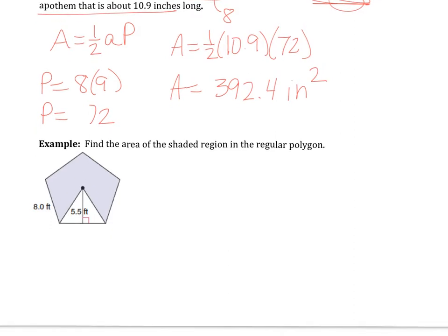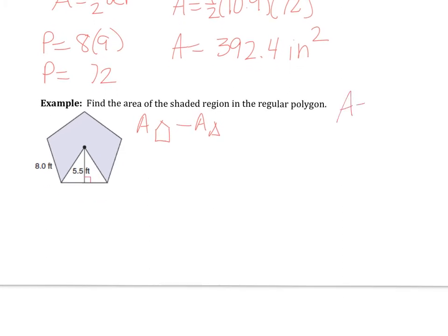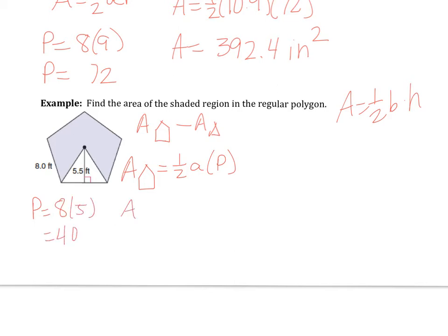We are going to find the area of this shaded region. I see we need to find the area of a pentagon minus the area of a triangle. Area formula for a triangle is one-half base times height. The area of the pentagon equals one-half the apothem times the perimeter. The perimeter is 8 times 5, which equals 40. Area of the pentagon equals one-half times 5.5 times 40, which equals 110 feet squared.